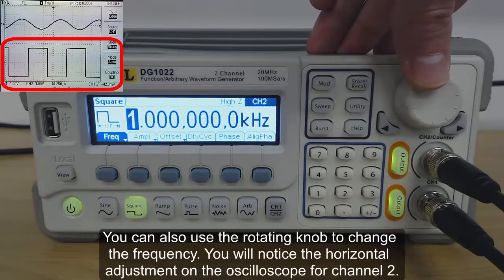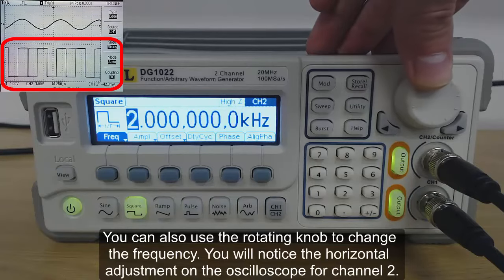You can also use the rotating knob to change the frequency. You will notice the horizontal adjustment on the oscilloscope for channel 2.